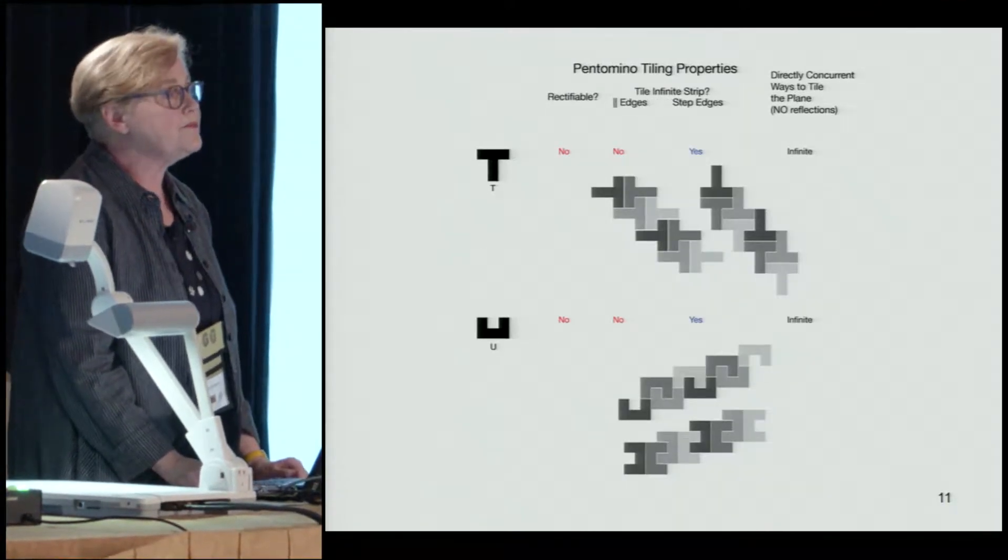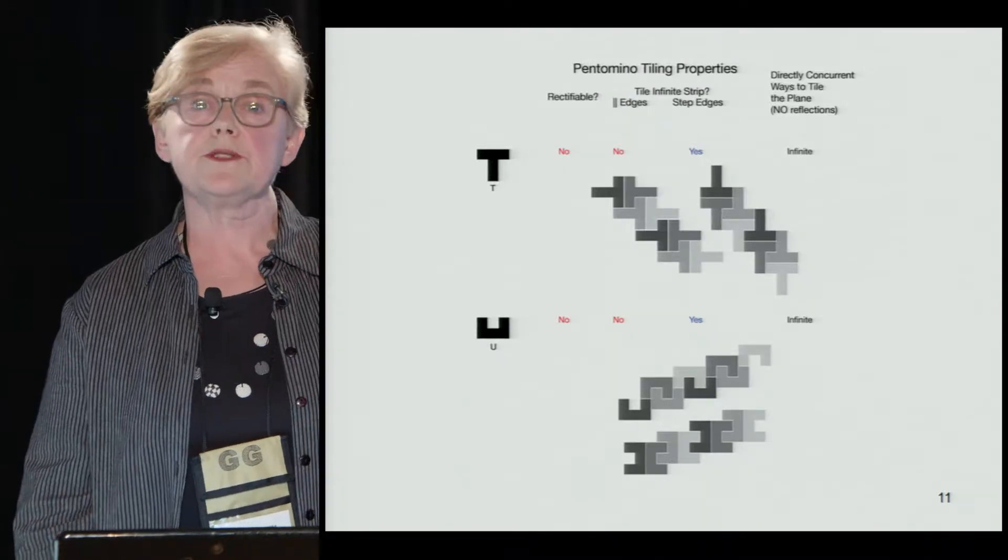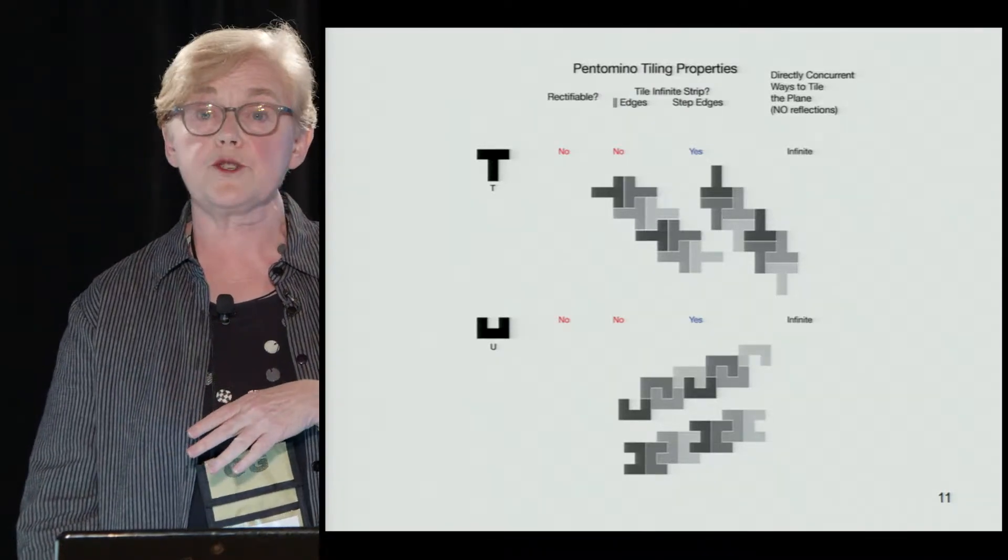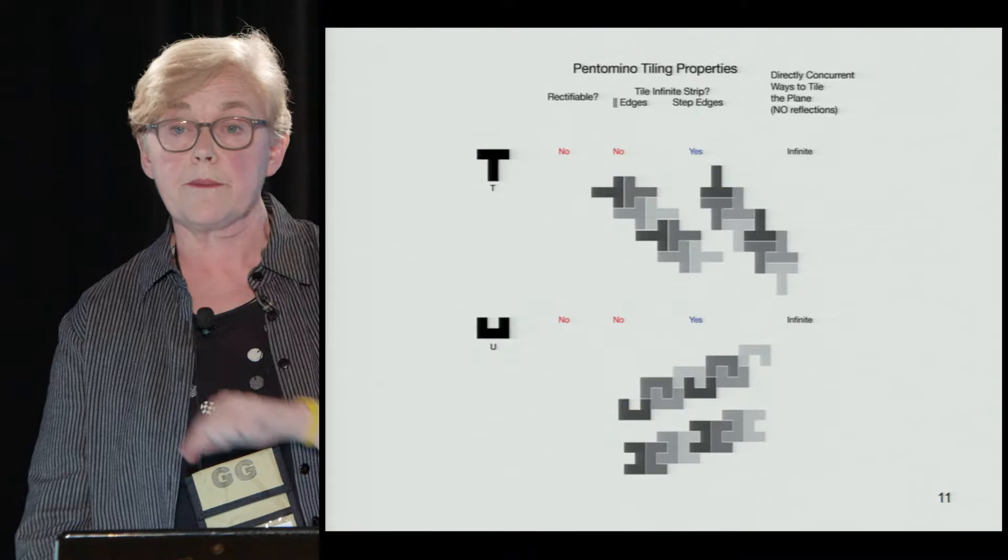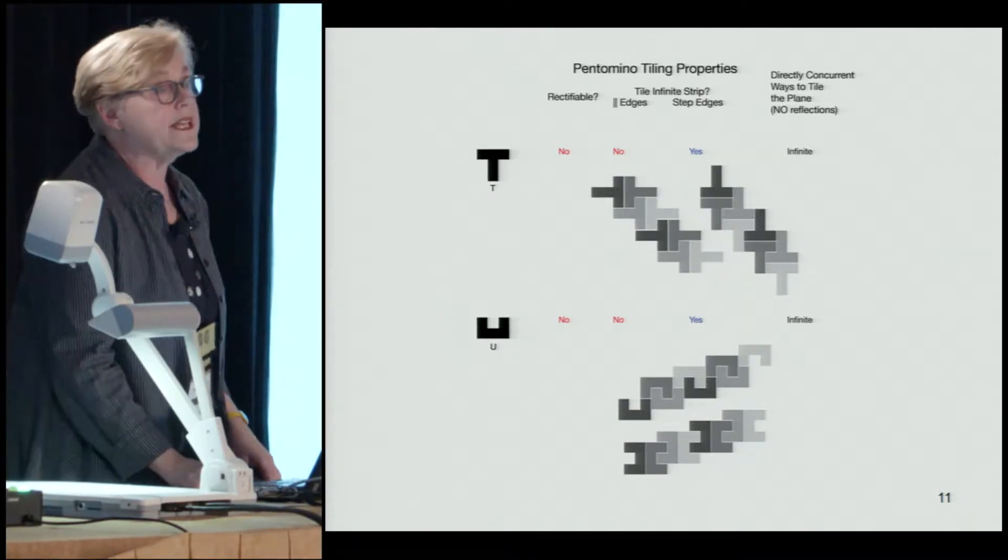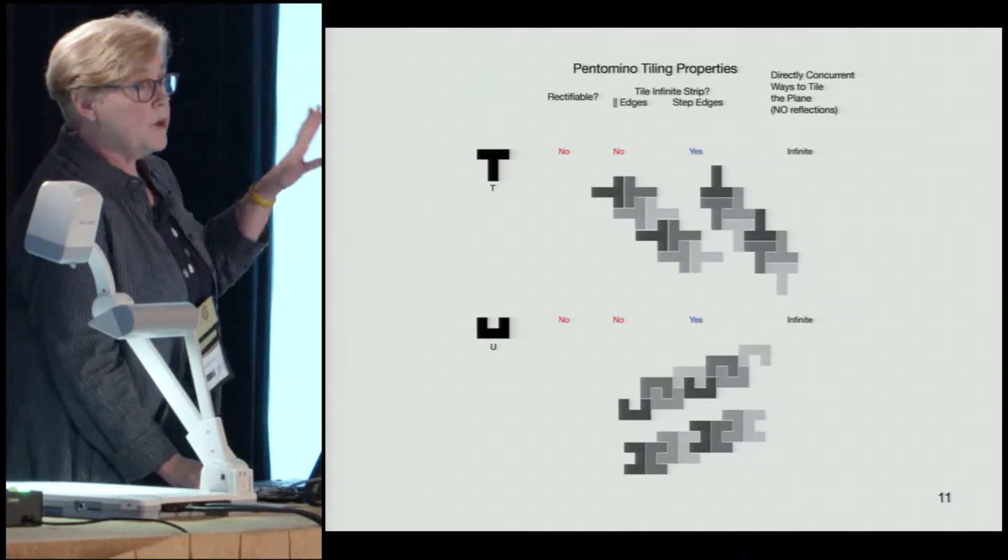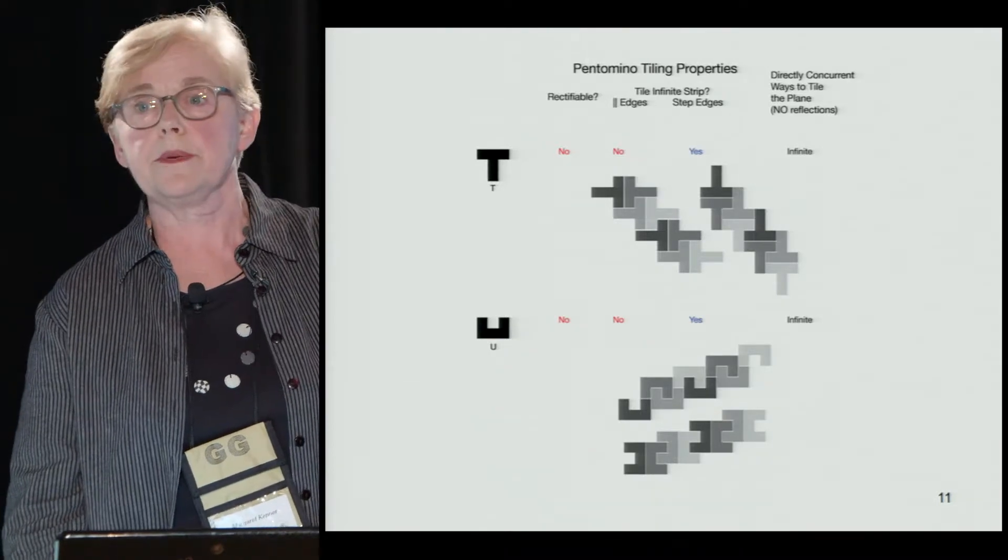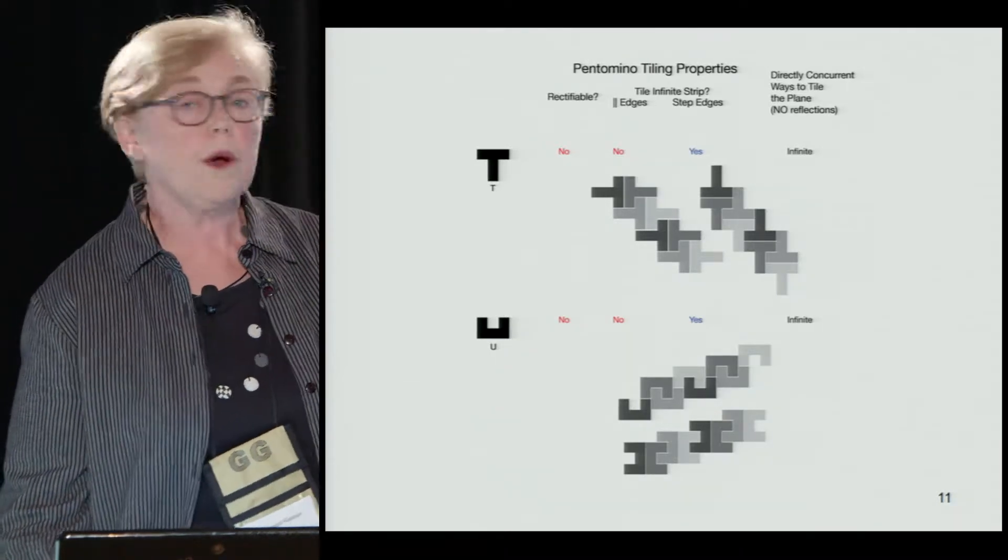So as an example, let's look at the T pentomino. It can be formed into two infinite strips that have the same stair-step profile, so they can be glued together. If we call them A and B, we can glue them together in a pattern like AB AB AB forever, or I could choose another pattern entirely.